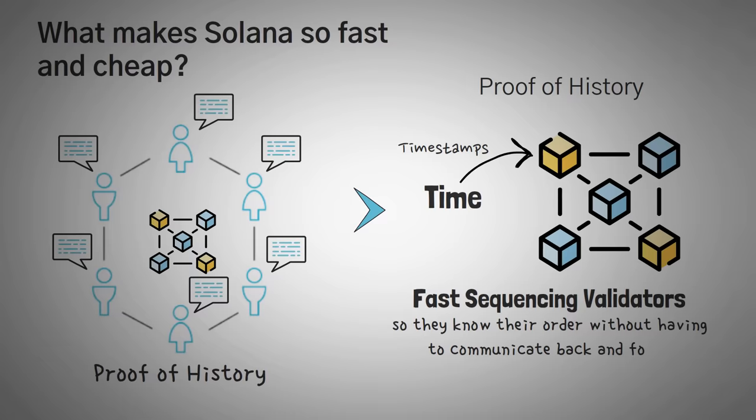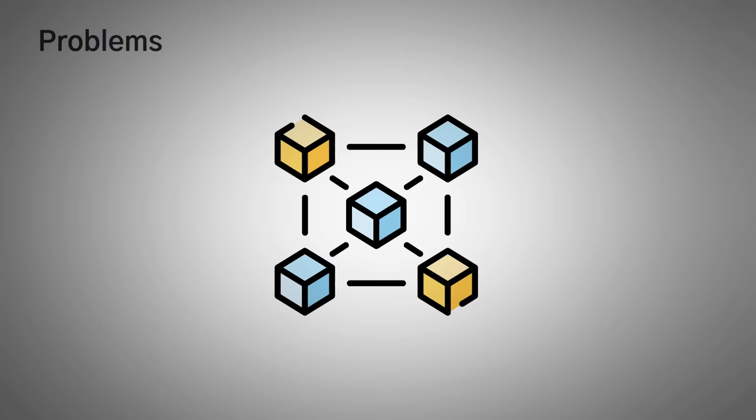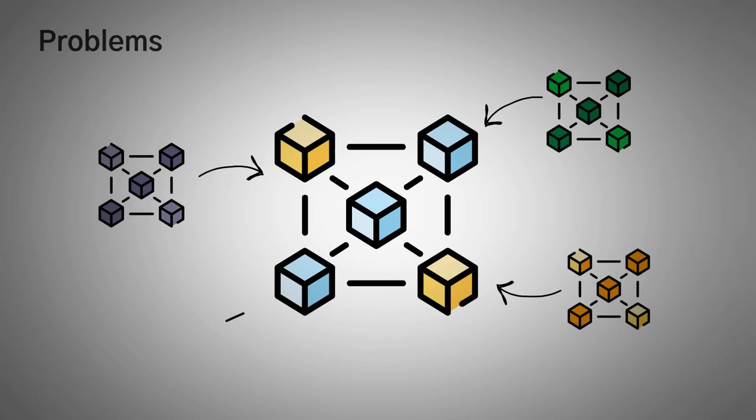One big problem that other blockchains have is that they have to agree on time. We all take this for granted, but computers have to constantly be going, what time is it, really? Since they can't do things like look at their phone or even the sun to determine it.